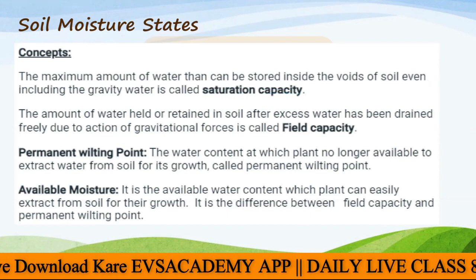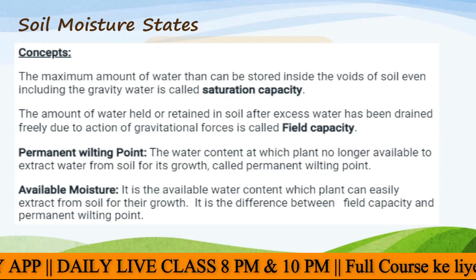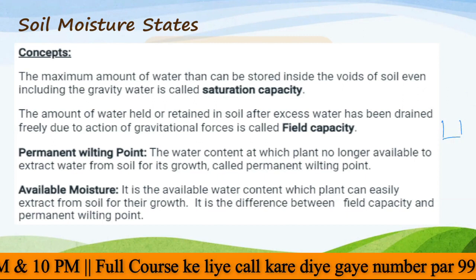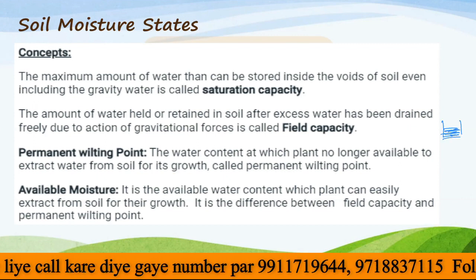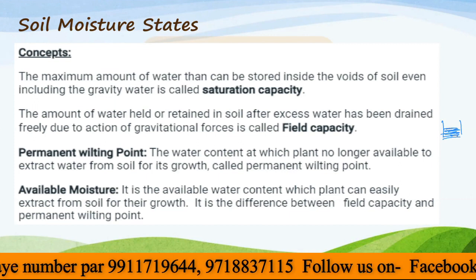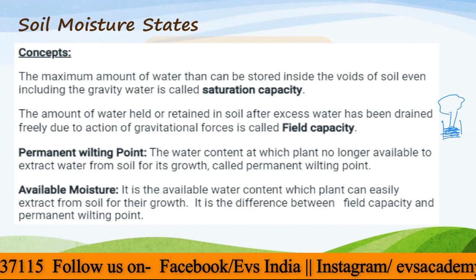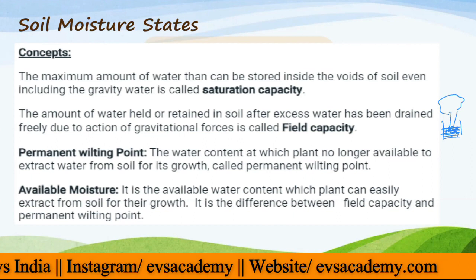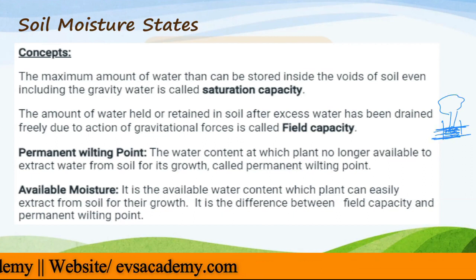Then we have the permanent wilting point — the water content at which plants are no longer able to extract water from the soil. All the capillary water is gone, perhaps due to plant absorption or non-availability of water. That exact point where the plant cannot take any more water from the soil is called the permanent wilting point — the critical point where soil moisture is completely depleted for plant use.